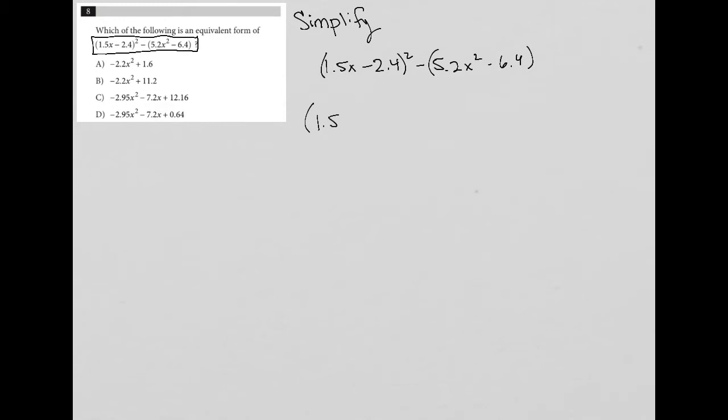But just to write this all out so we can see all of what's happening, that becomes 1.5x minus 2.4 times 1.5x minus 2.4.